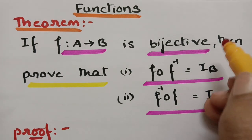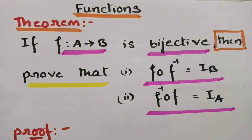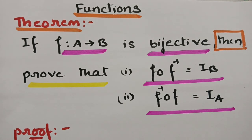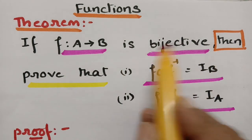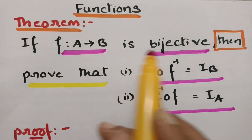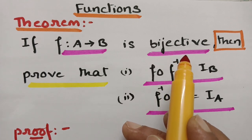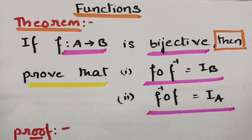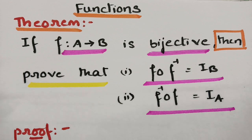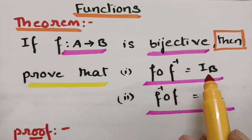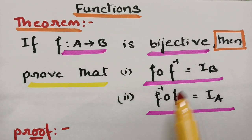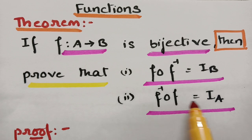In this theorem statement, 'then' plays a vital role. Before 'then', whatever the sentence is, it is given. After 'then', we have to prove. So here, before 'then', what is given: f maps from A to B is a bijective function. Bijection means bi, which means 2, so we have two properties: f is one-one property and f is onto property. We have to prove that f circle f inverse is equal to IB, and f inverse circle f is equal to IA.